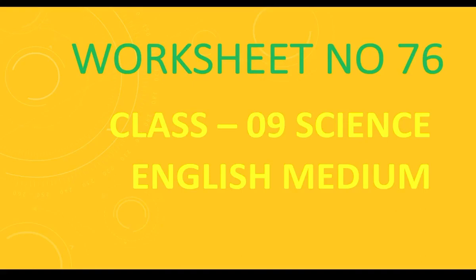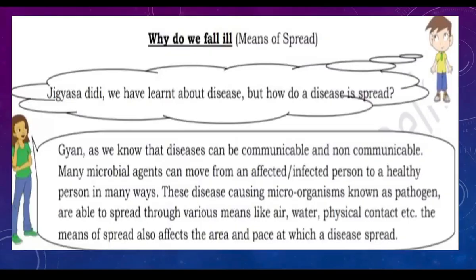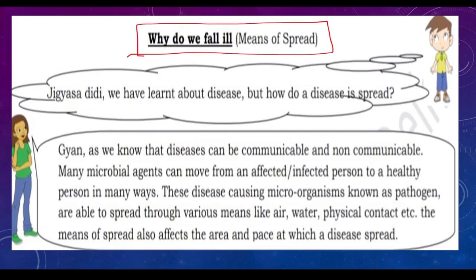Class 9th Science, 22nd January. Our chapter 'Why Do We Fall Ill' is going on. Today we'll discuss the means of spread — bimaariya kaise felti hai (how diseases spread). We know that diseases can be communicable and non-communicable.